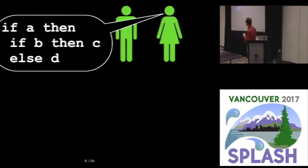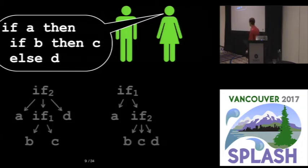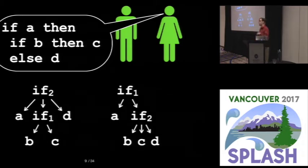And it basically boils down to, should that else belong as part of the first if, or as part of the second if? If it should belong as part of the first if, we want this tree on the left, whereas if it should be part of the second if, we want the tree on the right.